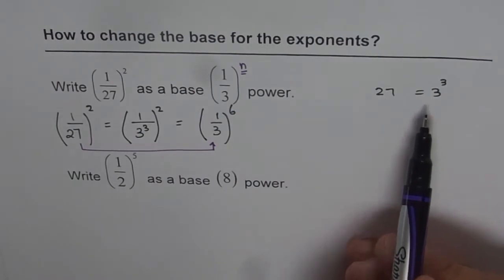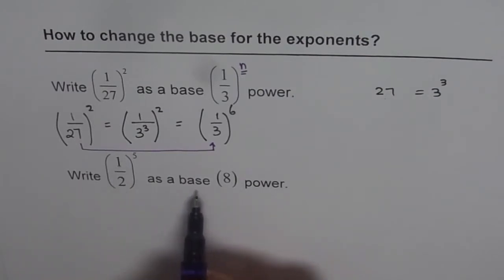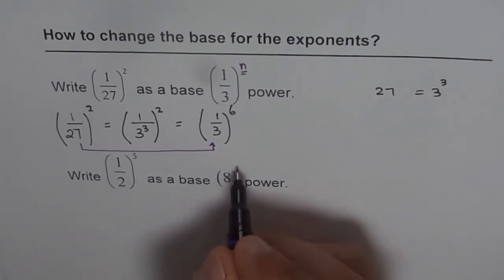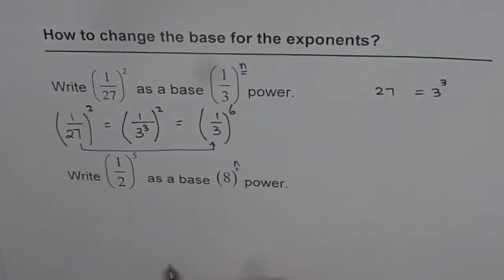Let's do it once again. And this time we will do with half to the power of 5. We will like to write it as with base 8 what should be the power. So this is what we need to figure out. So the strategy is exactly same as we did before. But this time we may get some negative exponents. See how.